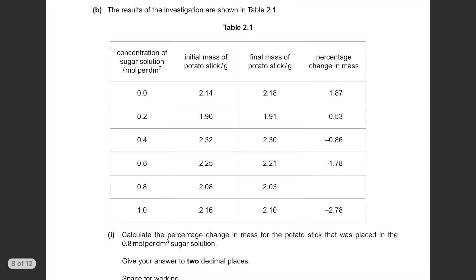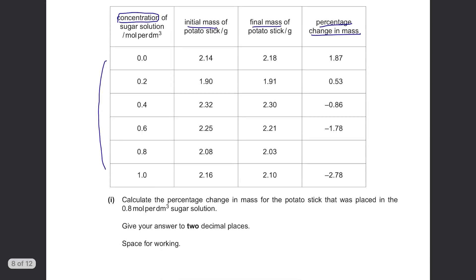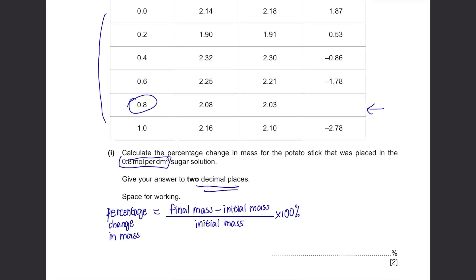Part B(ii): The results of the investigation are shown in table 2.1. Concentration of sugar solution from 0.0 to 1.0, initial mass, final mass and percentage change in mass. Calculate the percentage change in mass for the potato stick that was placed in the 0.8 mol per dm cubed sugar solution. Give your answer to two decimal places. The formula to calculate the percentage change is the final mass minus initial mass divided by the initial mass multiplied by 100. So it's 2.03 minus 2.08 divided by 2.08 times 100. The answer is negative 2.40 rounded to two decimal places.